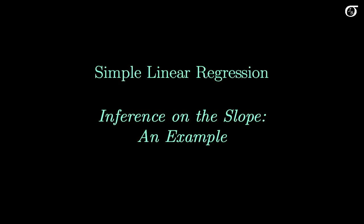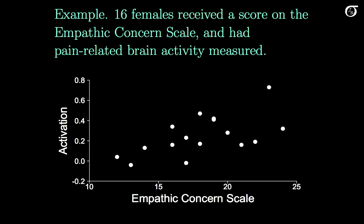Let's look at an example of inference on the slope. If you recall this example we've looked at previously, we have 16 females receiving a score on the Empathic Concern Scale and having pain-related brain activity measured by an MRI while their partner had a painful stimulus applied. We have our score on the Empathic Concern Scale as our X variable and our activation level in the pain centers of the brain as our Y variable, and we're trying to see if there is a relationship there.